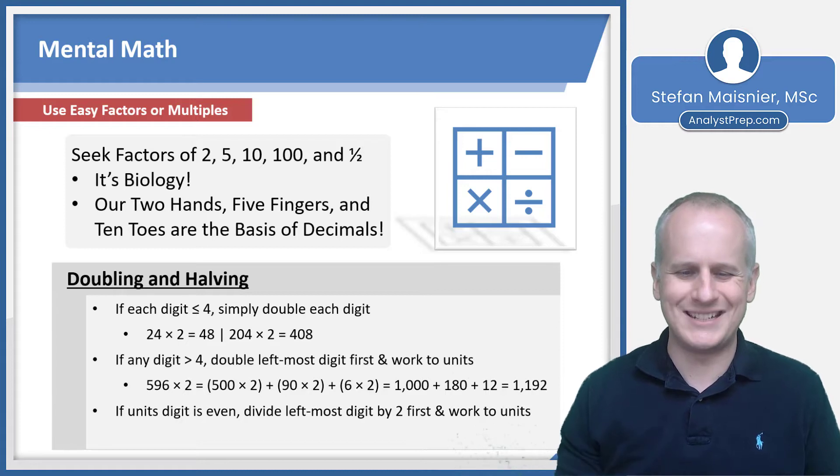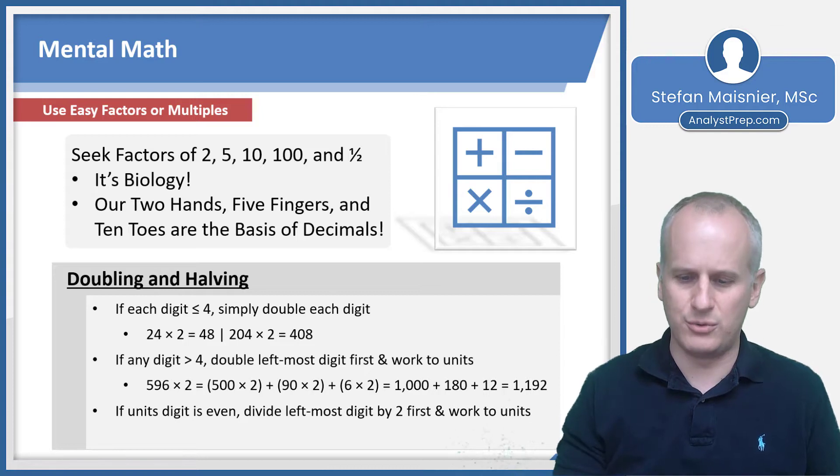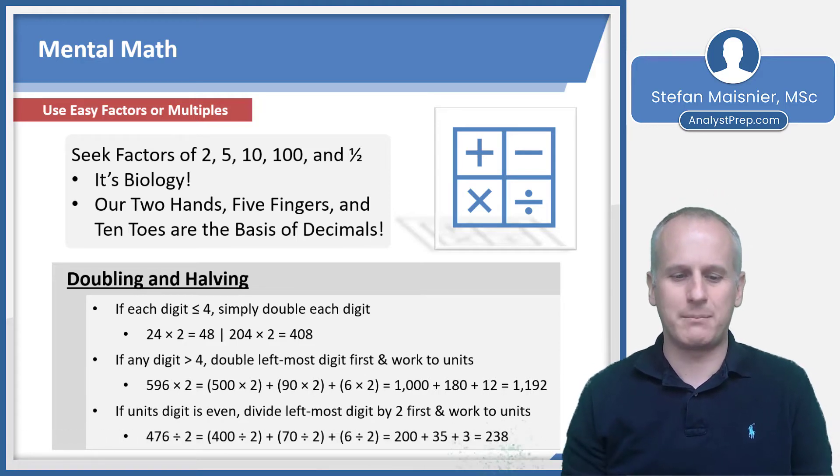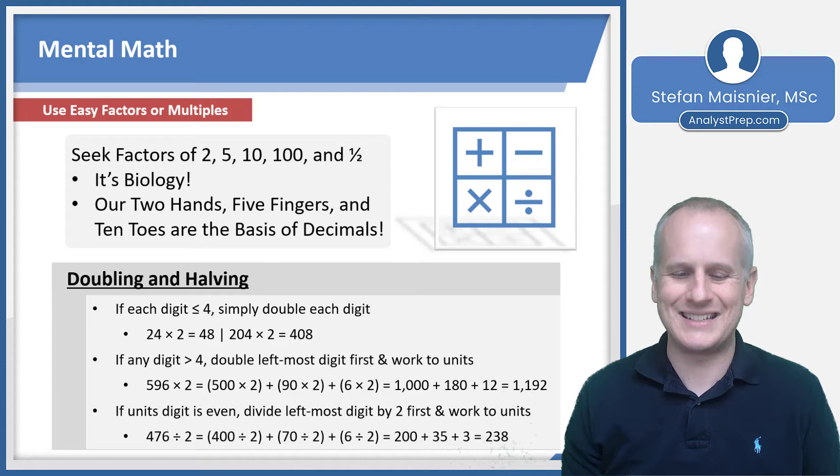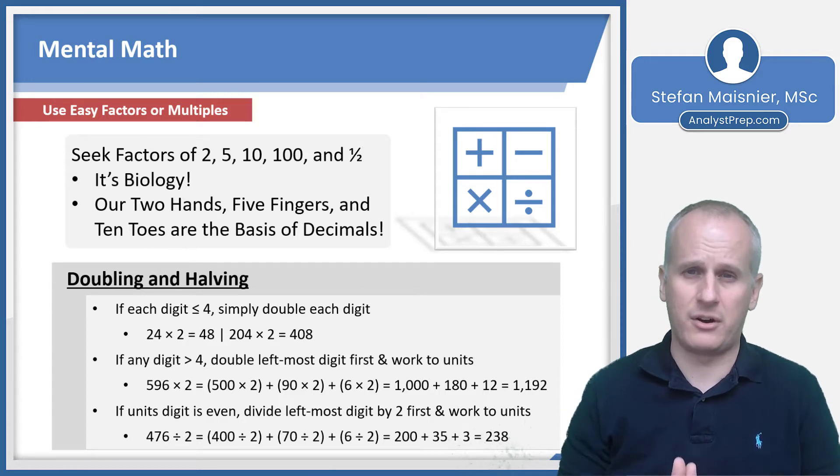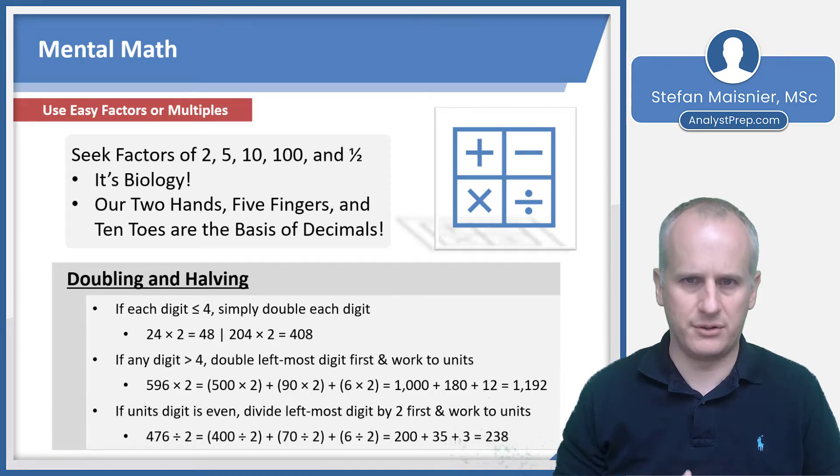If the unit's digit is even, you can just divide the leftmost digit by 2 first and work to your units as well. For instance, 476 divided by 2. I'm going to take 400 and divide that by 2, then add 70 divided by 2, then add 6 divided by 2. So 400 divided by 2 is 200, 70 divided by 2 is 35, and 6 divided by 2 is 3. I sum those values up to get 238. Doubling and halving are probably the easiest intuitive manual calculation skills that you can build quite quickly on your own.